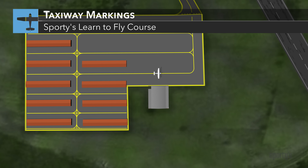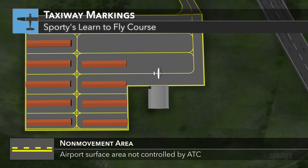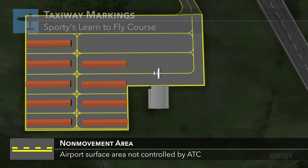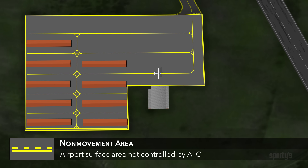When parked at the FBO or ramp at a towered airport, you'll likely be located at what is called a non-movement area. By definition, this is an area not controlled by ATC, and you can taxi around as you'd like without an ATC clearance.